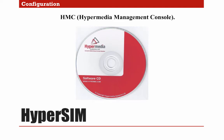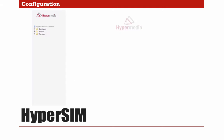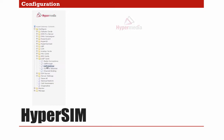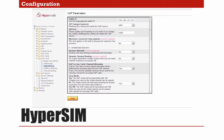This software comes on a CD that is bundled with every gateway purchase. Once we open the HMC and access the gateway, we need to navigate to Configure VoIP Card, VoIP Settings, where we will find VoIP Parameters.